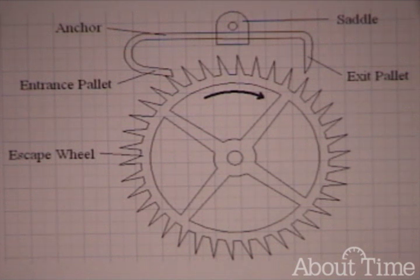As you can see on your screen, I have a diagram showing the anchor, the saddle, the pallets entrance and exit pallets, and the escape wheel. Note the direction of rotation.